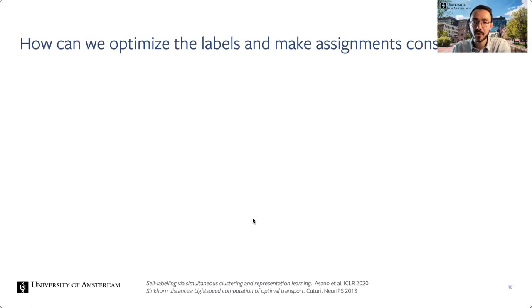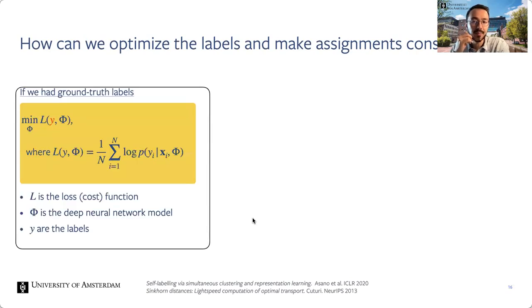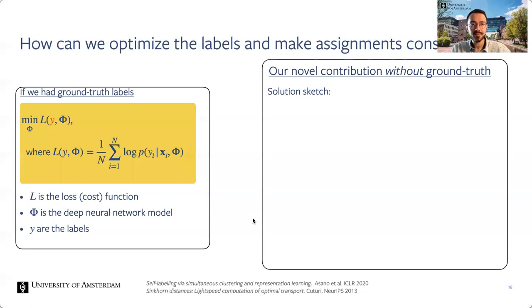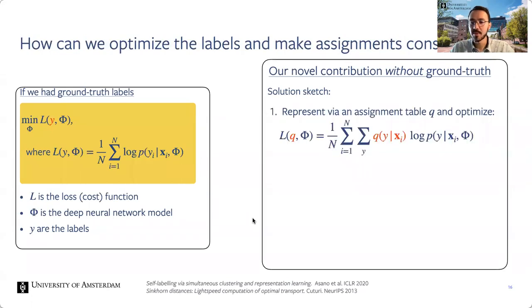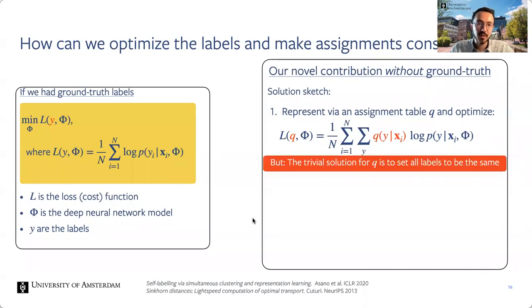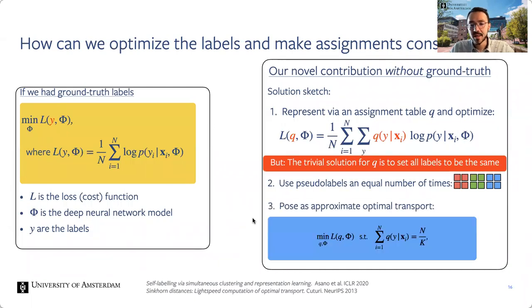Technically, what made this possible is combining three ingredients that hadn't been combined before. We change the standard loss function used when we have labels y to work when we don't have labels. We need: first, the usage of an assignment table that makes the label soft and optimizable; second, we enforce equipartitioning of the labels as a regularization to avoid trivial solutions; third, we pose and solve this as an optimal transport problem, making the objective fast to solve on a GPU.